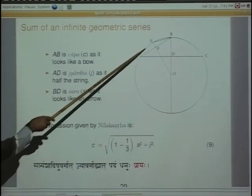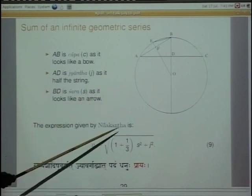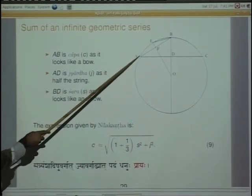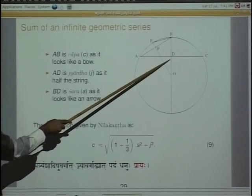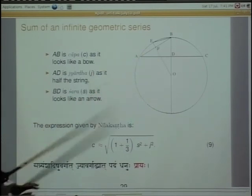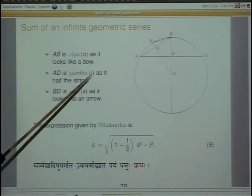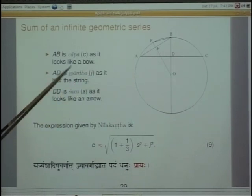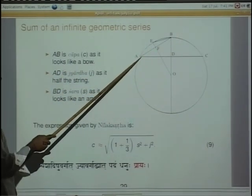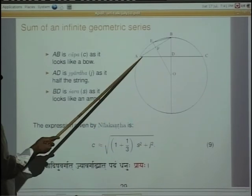Nilakanatha says the problem is to find the relation between the arc length and the chord length. This in fact gave rise to calculus in India. They had analytical results involving the sine function, and therefore they had to find the sine function precisely. I want to introduce some terms: a section of a circle looks like a bow — chapa — so the arc is called chapa. BD looks like an arrow — shara — and AC looks like the string of the bow, called jya.